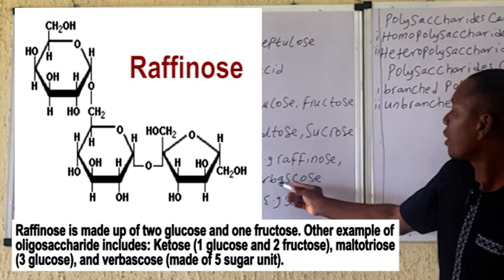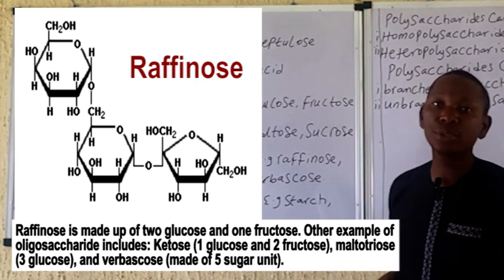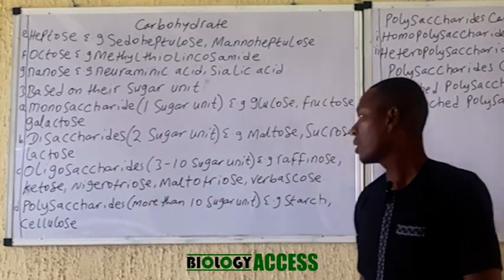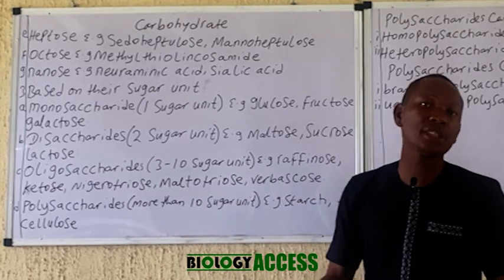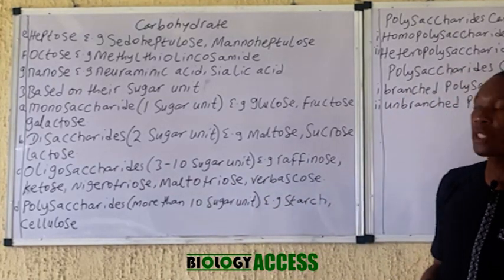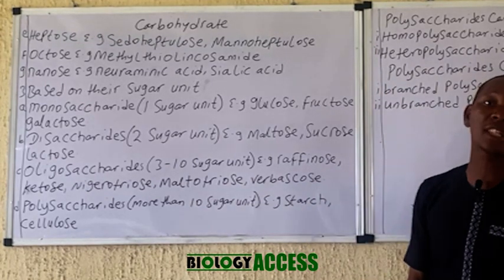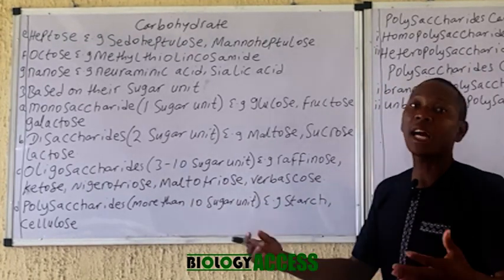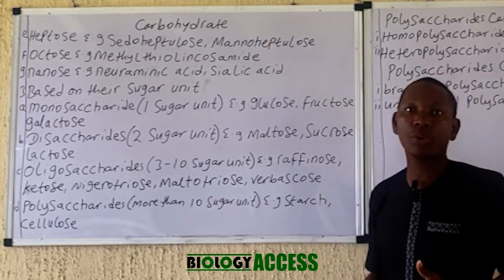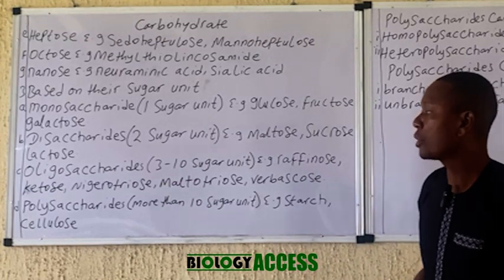Verbascose comprises five sugar units. Next we have polysaccharides, which have more than ten sugar units, or in some cases more than fourteen sugar units. Examples include starch, cellulose, and glycogen — the macromolecules, meaning large molecules.